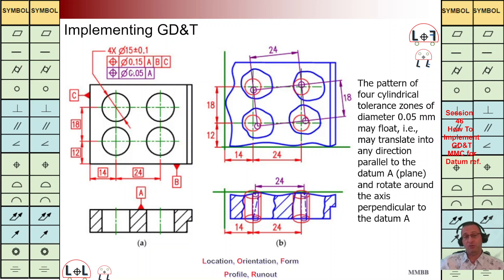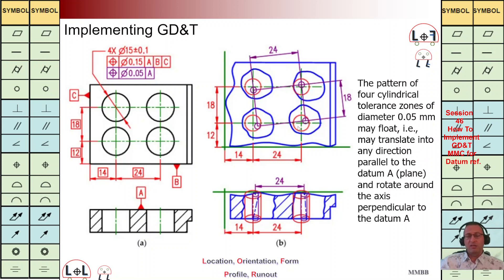We are going to have another positioning control — a cylinder with a diameter of 0.15 with respect to ABC. It means it should be perpendicular to A, the distance with respect to B is important, and the distance with respect to C is also important. That's why we use basic dimensions with respect to B and also with respect to C. This small cylinder should be inside that cylinder of diameter 0.15 — it can rotate, it can be anywhere.